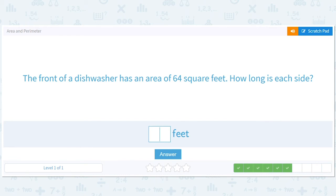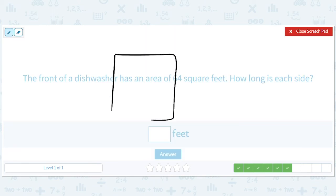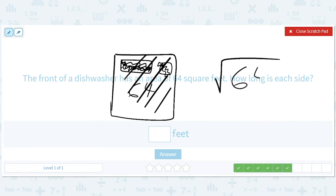The front of a dishwasher has an area of 64 square feet. How long is each side? Okay. So here's the front of a dishwasher. There are all these knobs. I don't understand what any of them mean. I'm sure there's some miracle person who does. And the front of this dishwasher has an area of 64 square feet. So what we do for the length of each side is we take the square root of 64 and we get 8.